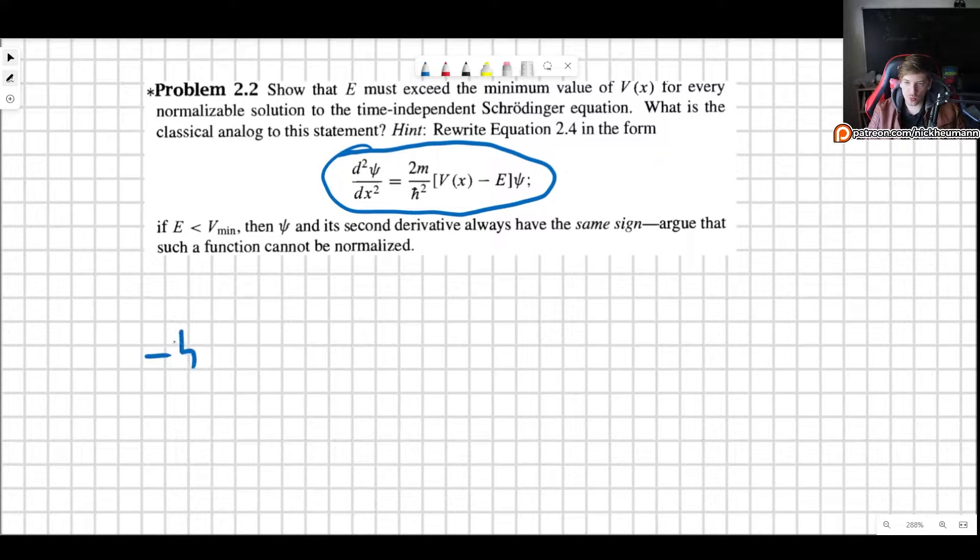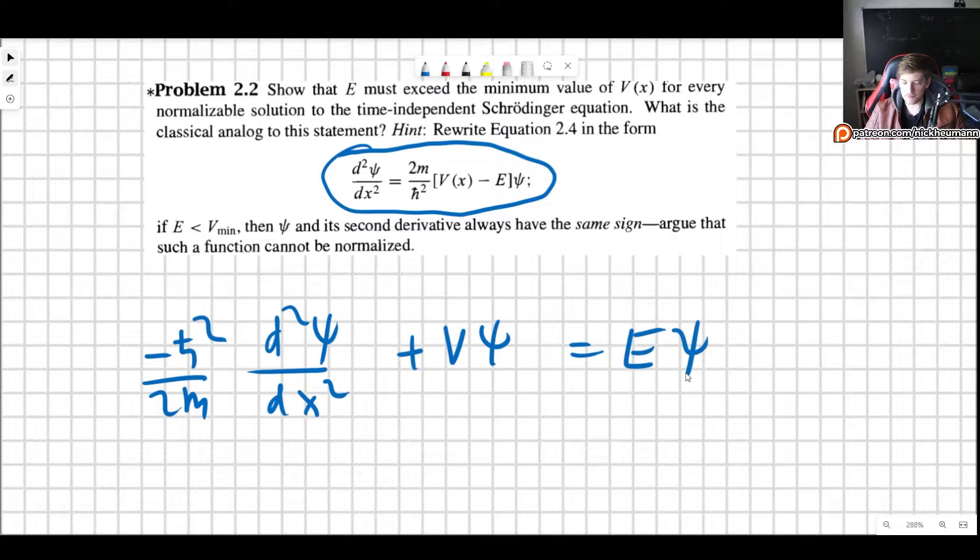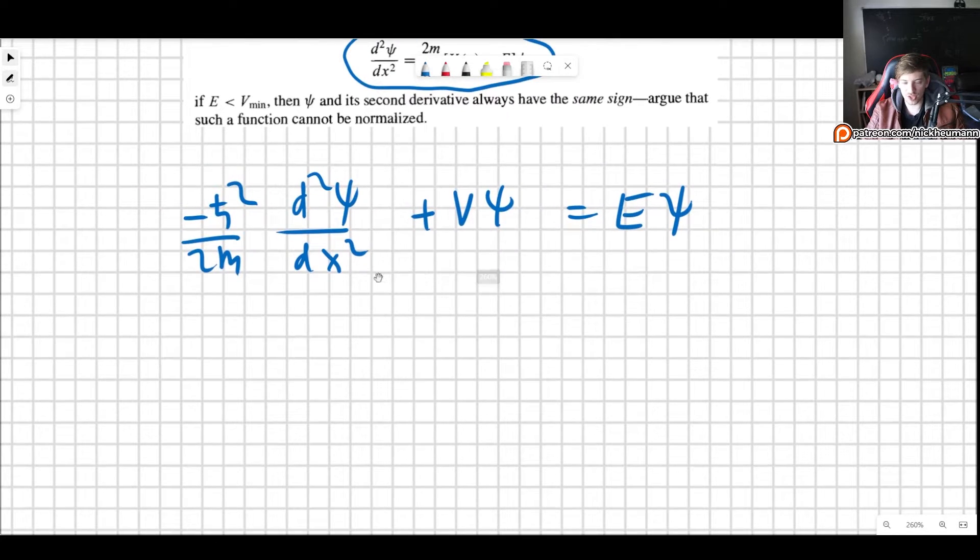So what we have is the Schrödinger equation: minus h-bar squared over 2m d squared psi dx squared plus the potential times psi. This is equal to E psi. Just very lazy notation, not including the x-dependences which are of course implied.